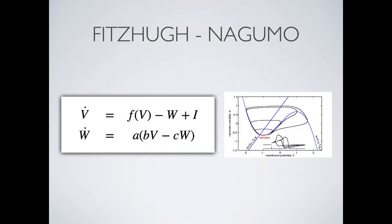Let us build intuition about what happens to planar flows with a good example: the FitzHugh-Nagumo model, which can do so many things — representing heart cells, neurons, flows in the Belousov-Zhabotinsky reaction, and even dictyostelium behavior. F is a cubic, visible in the shape of the V-nullcline. We're going to go through the Hopf bifurcation here. The Andronov-Hopf bifurcation happens when a pair of eigenvalues lose their real parts and have only imaginary roots.